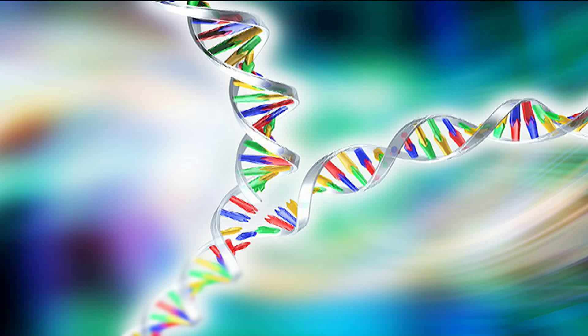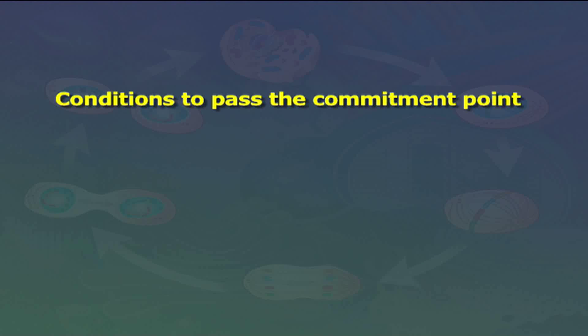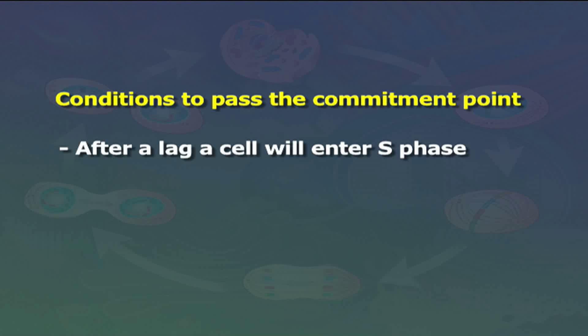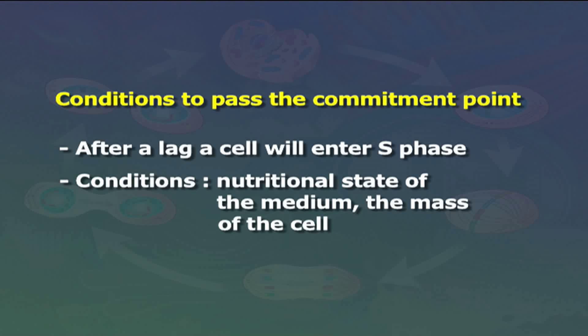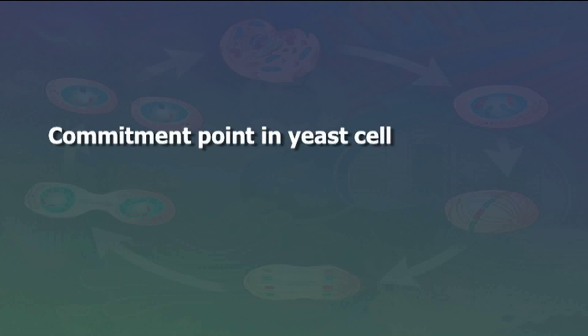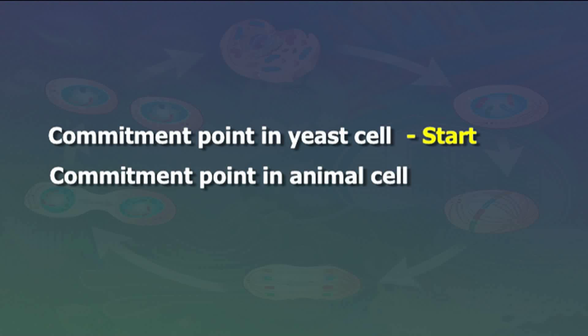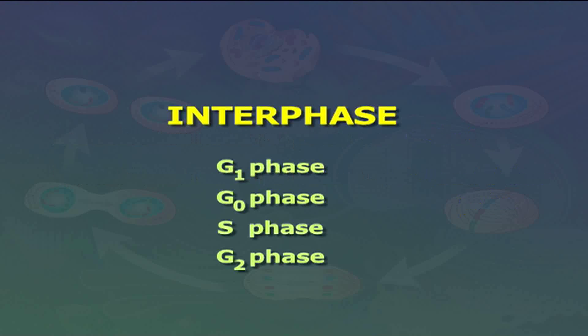In G1 phase, if conditions to pass the commitment point are satisfied, after a lag the cell will enter S phase. These conditions include the nutritional state of the medium and the mass of the cell. The commitment point is clearly observed in yeast cells, where it is called Start. The comparable feature in animal cells is called the restriction point.